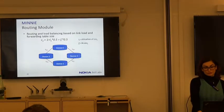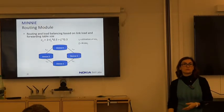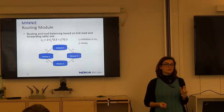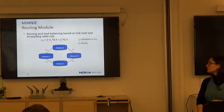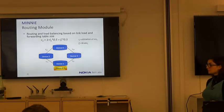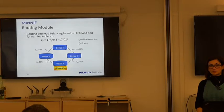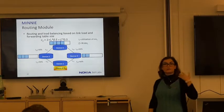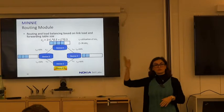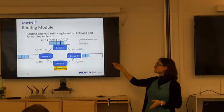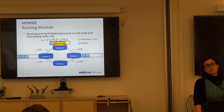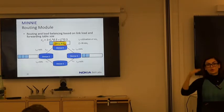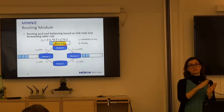How does the routing module work? It's like a classical routing module using link utilization, but we insert another variable: the impact of the number of rules on the neighbor switch. For example, if device one wants to send a packet to device four, and link utilization is equal across paths, we check the number of rules installed on the next hop. We have two choices — device two or device three. Device three has fewer rules, so we prefer to route through device three. Thus, our routing mechanism impacts our compression, and vice versa.